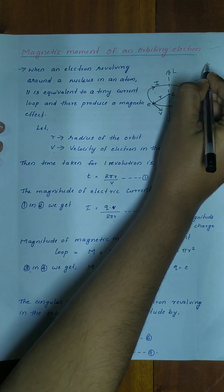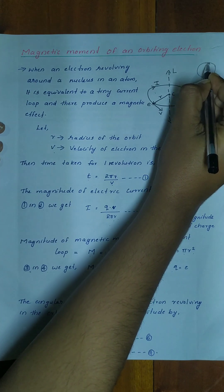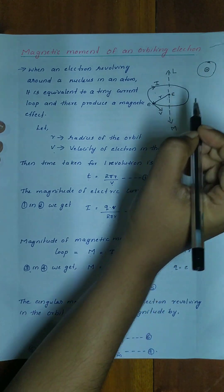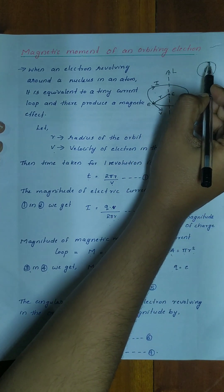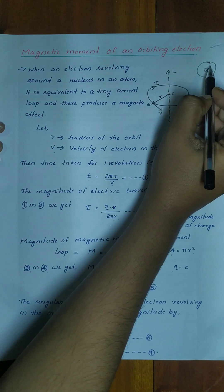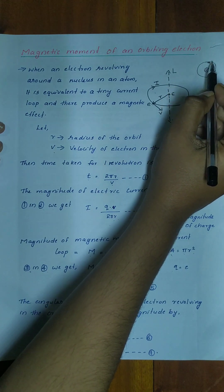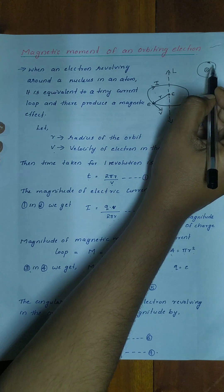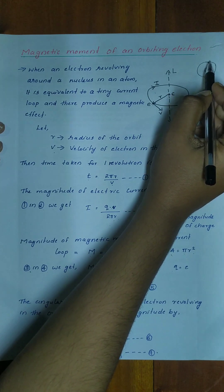The electron revolves around the nucleus. The electron is a charged particle. When a charged particle moves, it forms a small current loop and will produce a small magnetic effect.